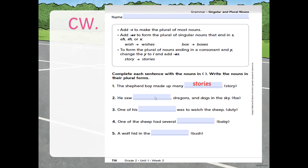He saw dragons and dogs in the sky — the word 'fox' becomes 'foxes,' adding ES because of the letter X. 'Duty' becomes 'duties.' One of his duties was to watch the sheep. 'Baby' becomes 'babies' — I-E-S because consonant plus Y rule. A wolf hid in the bush — 'bush' becomes 'bushes,' adding ES.